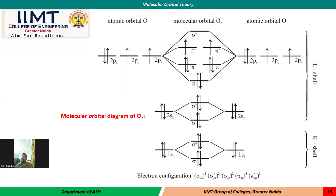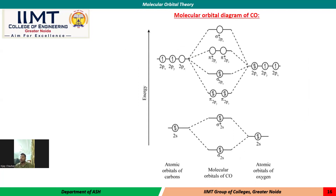In the molecular orbital diagram of O₂, the two oxygen atoms combine giving rise to the molecular orbitals of oxygen. Two electrons are unpaired, giving rise to the paramagnetic nature of the oxygen molecule, and the bond order is 2. In the molecular orbital diagram of CO (carbon monoxide), all electrons are paired, making it diamagnetic in nature, and the bond order is 3.